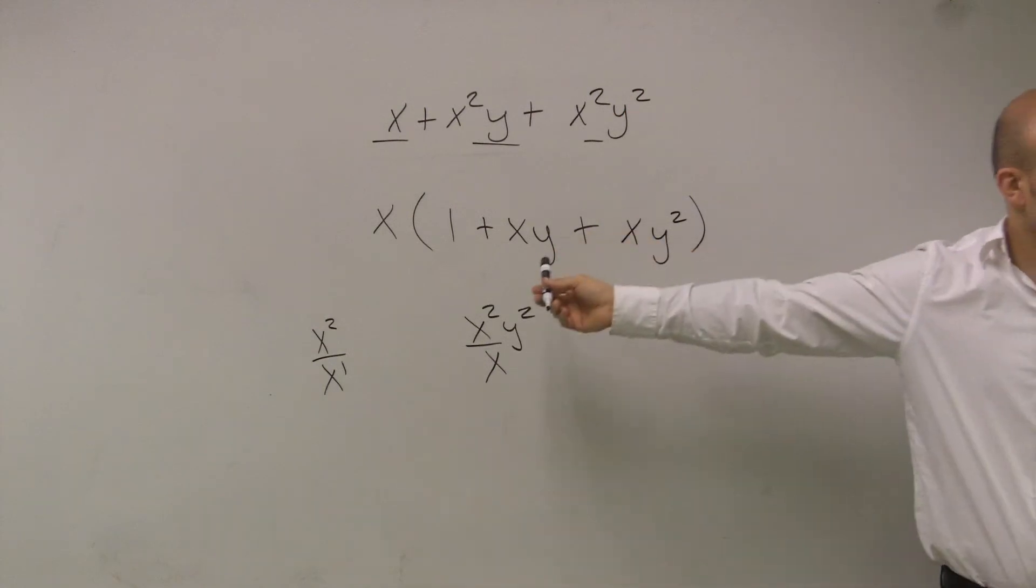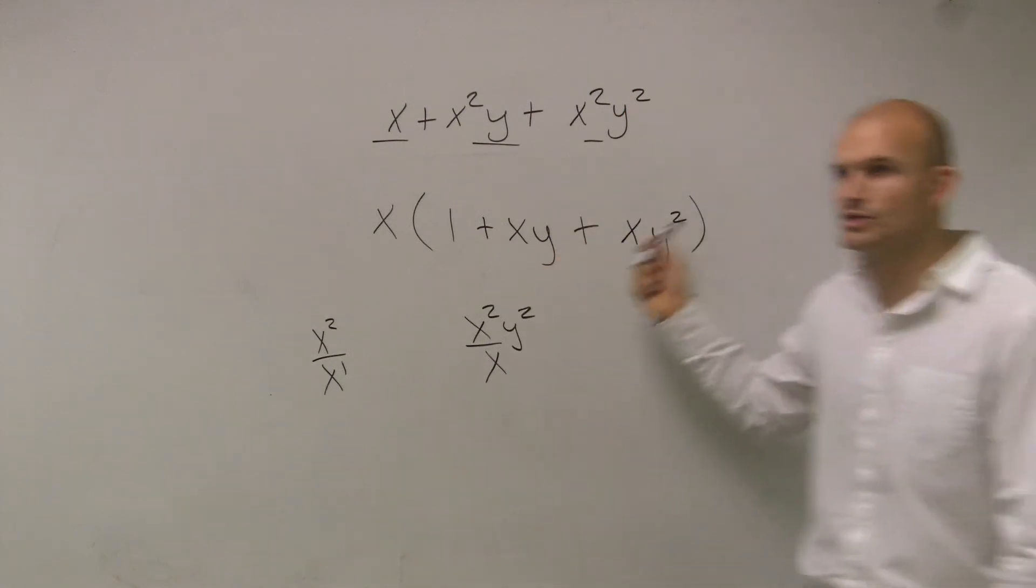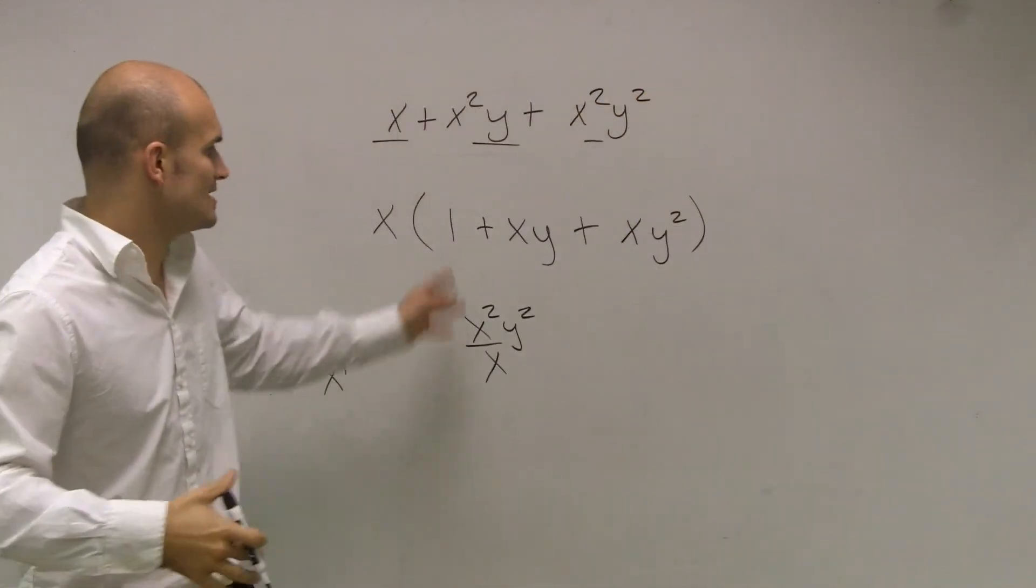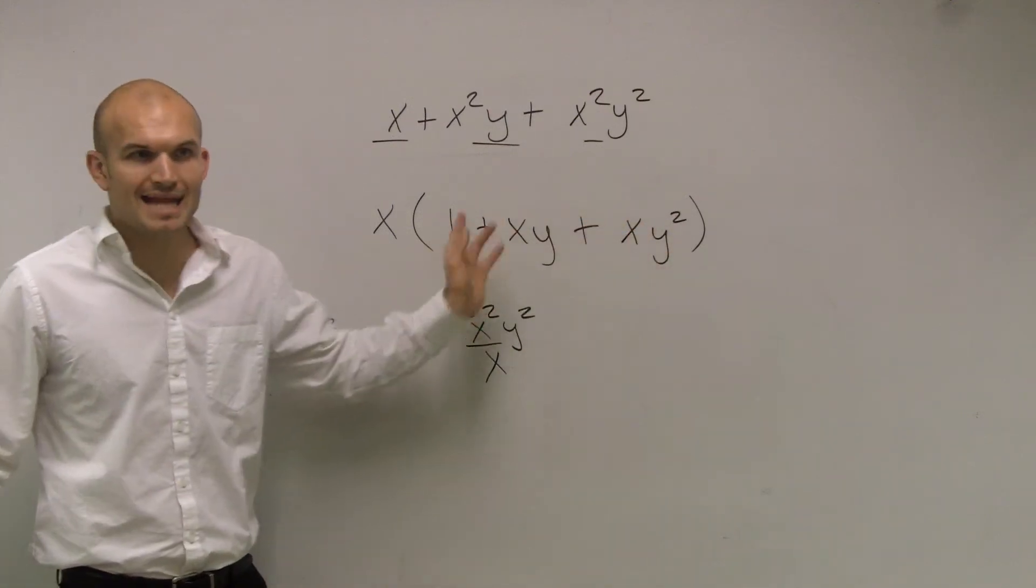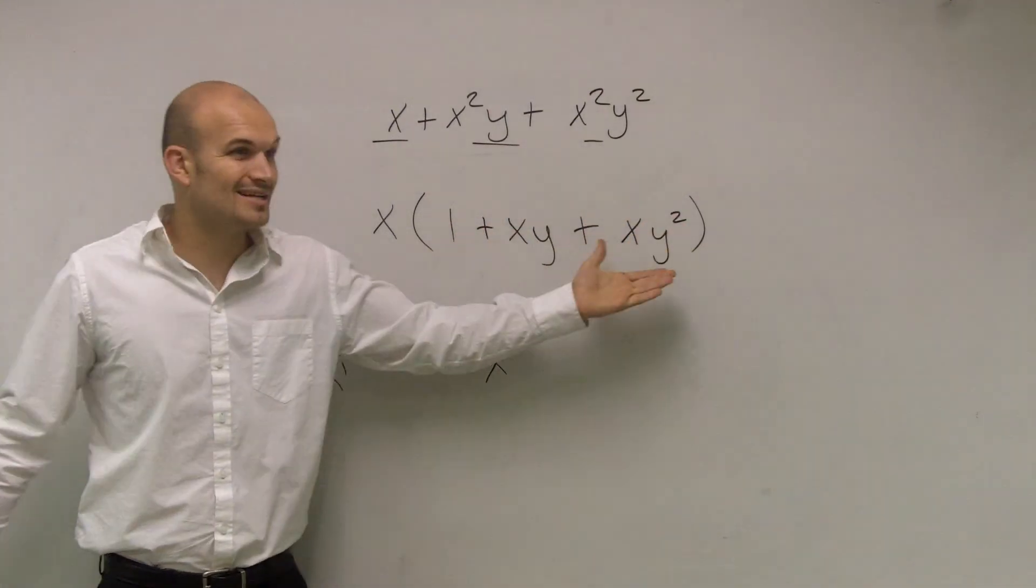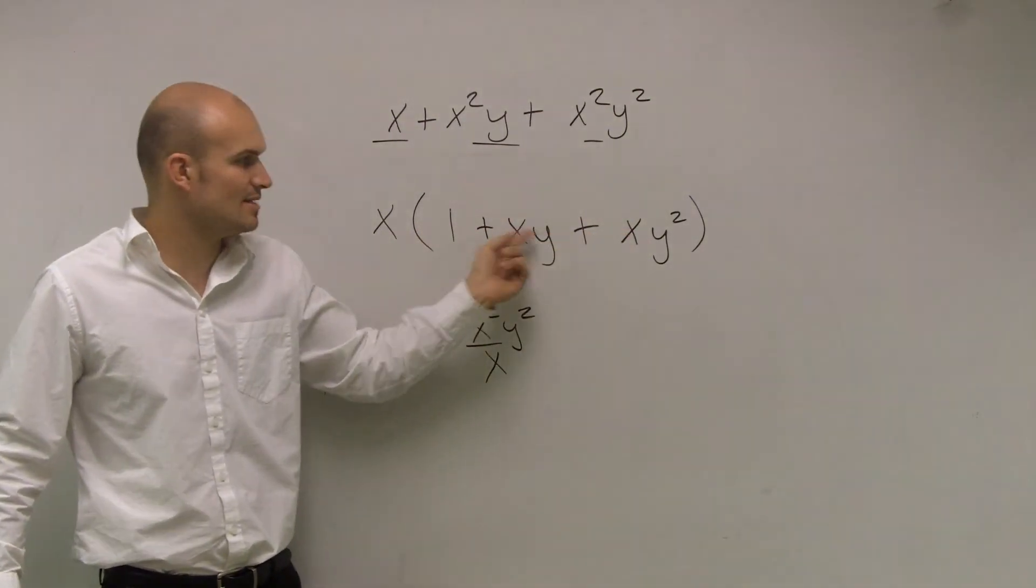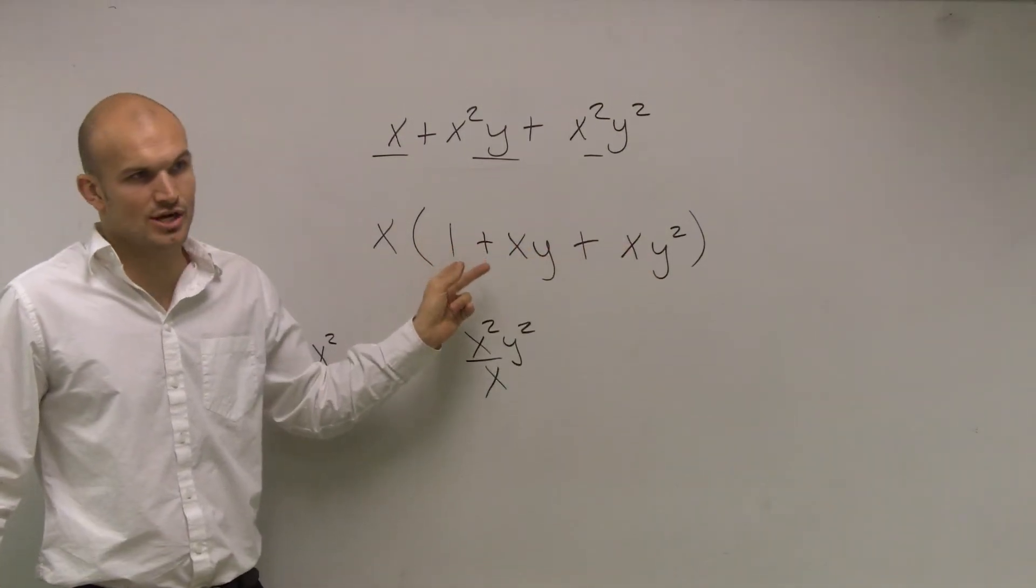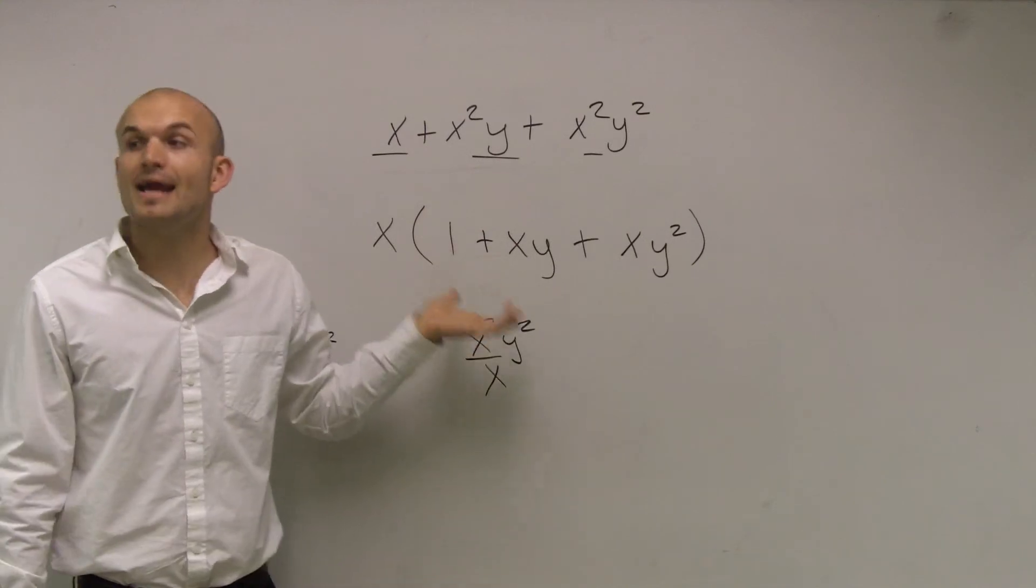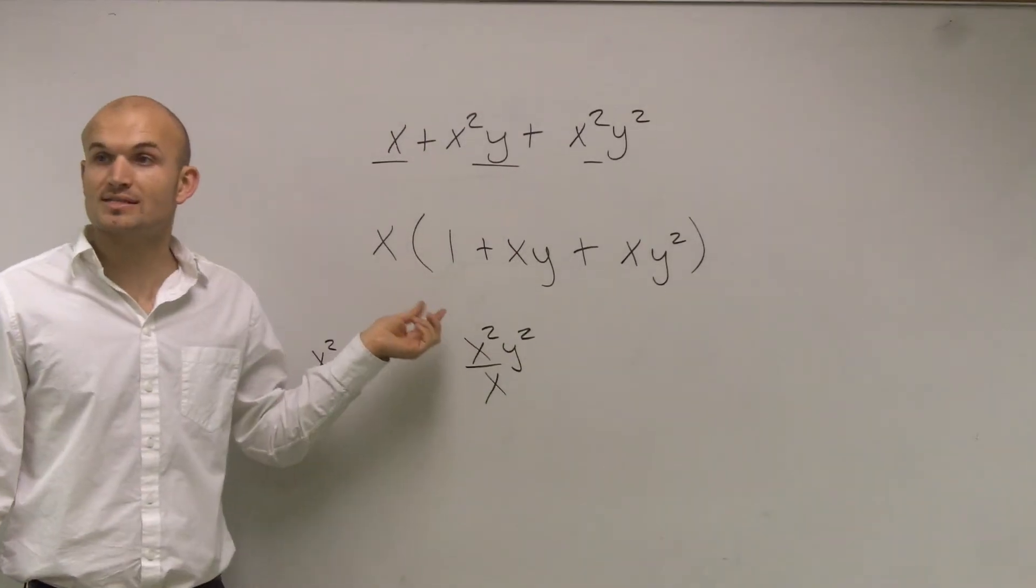Now I look at my other factor, and it's really important for you guys to do this. Look at your other factor and determine is there anything else that these share? And no, they don't share. I mean, these two have x's and y's, but this one doesn't share as well. So therefore, I have factored out the greatest common factor.